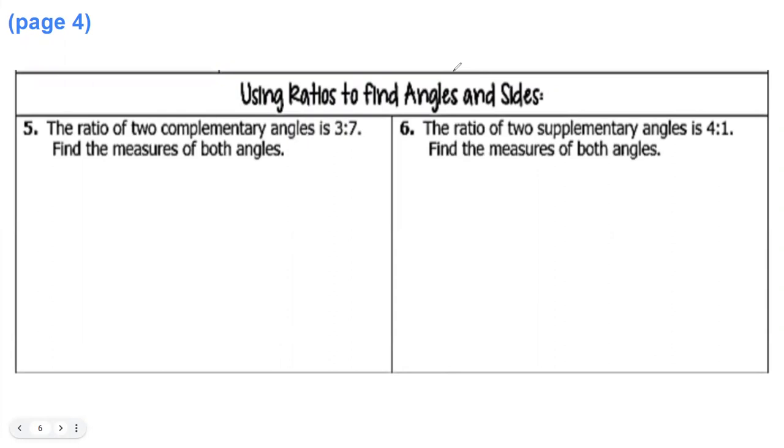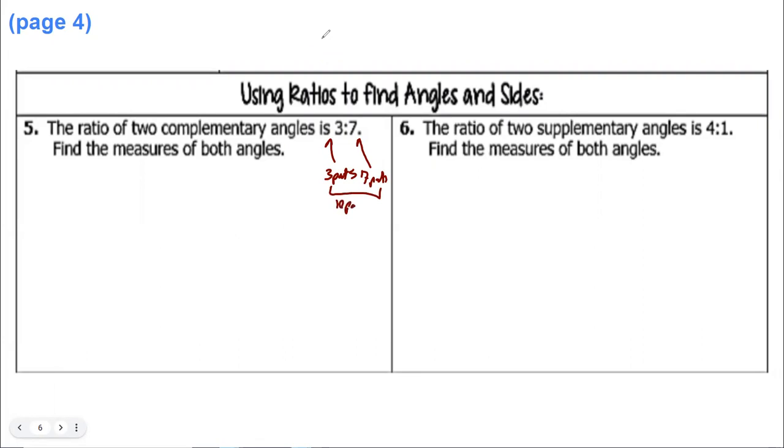Now a ratio can be used to solve problems, just one ratio. For example, we know the ratio of two complementary angles. We did this by the way when we did partitioning of line segments where we said like three parts on one side, four parts, and there's seven parts total. All right, so here the ratio of two complementary angles is 3 to 7. How would you do this, right? So we have three parts and seven parts, right? So that's three parts, seven parts. That is 10 parts total.